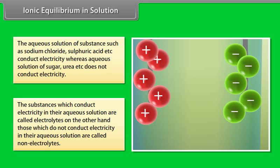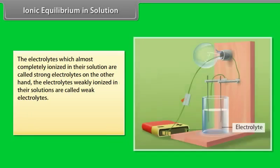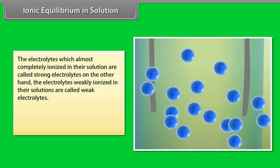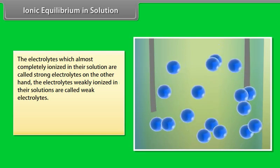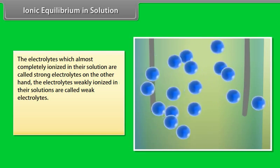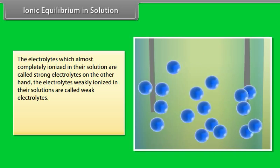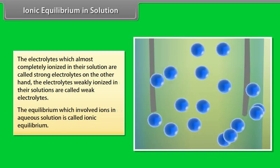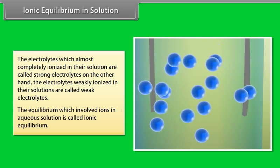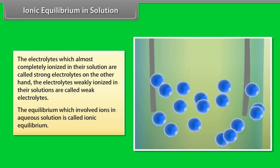Those which do not conduct electricity in their aqueous solution are called non-electrolytes. The electrolytes which are almost completely ionized in their solution are called strong electrolytes, whereas electrolytes weakly ionized in their solutions are called weak electrolytes. The equilibrium which involves ions in aqueous solution is called ionic equilibrium.